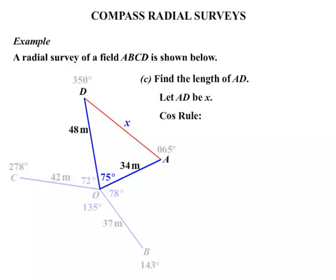We're going to be using the COS rule. Which is A squared equals B squared plus C squared minus 2BC COS A. Now we've got to start with A squared. We're going to use that as the X. So we'll have X squared equals. Now the B squared and the C squared, they're the two sides, the 48 and the 34. So we need to square them and add them.